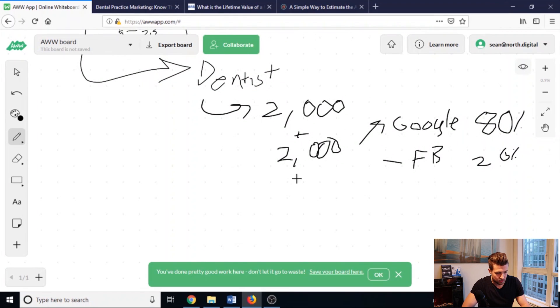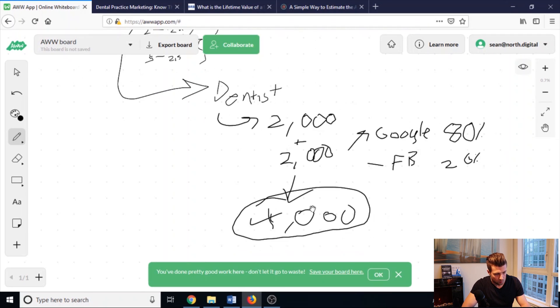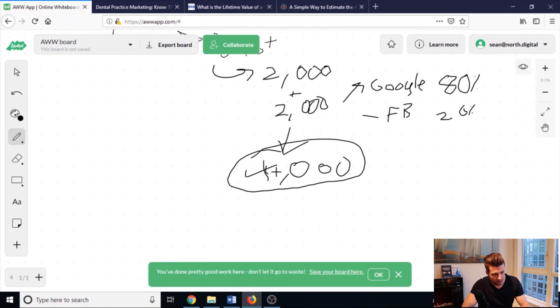Now, this is a total of $4,000 out of the dentist's pocket each month, and they're paying $4,000, and what we're doing is we are getting them approximately 30 new patients every month. So, 30 new patients.